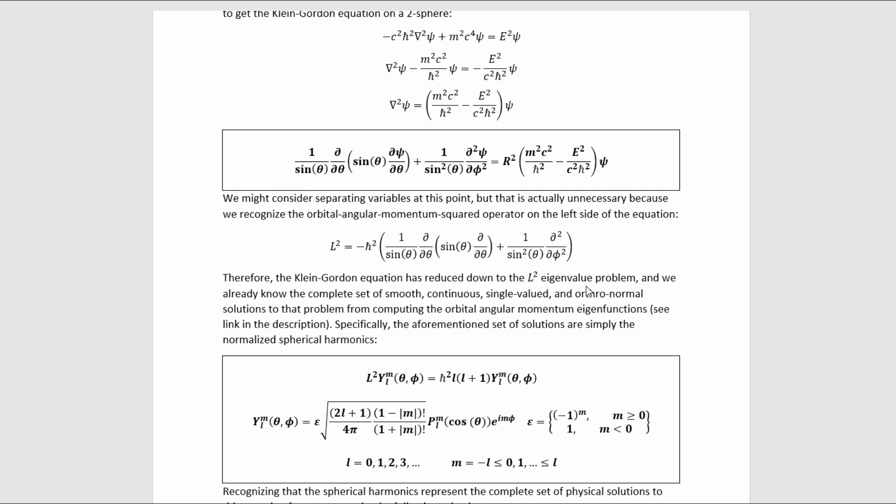Therefore, the Klein-Gordon equation has reduced down to the L-squared eigenvalue problem, and we already know the complete set of smooth, continuous, single-valued, and orthonormal solutions to that problem from computing the orbital angular momentum eigenfunctions. See the link in the description to my video on that. Specifically, the aforementioned set of solutions are simply the normalized spherical harmonics. We see that these spherical harmonics satisfy this orbital angular momentum squared eigenvalue problem.